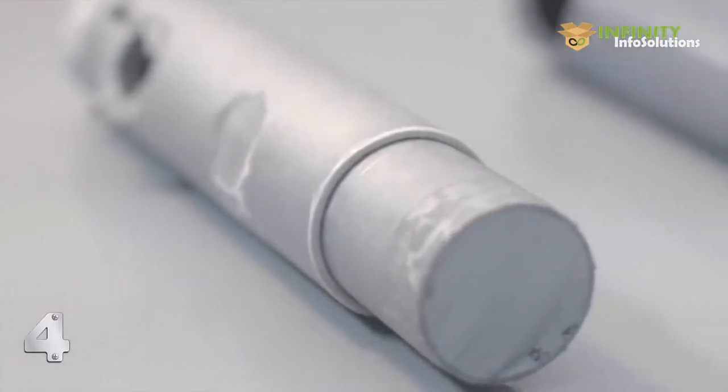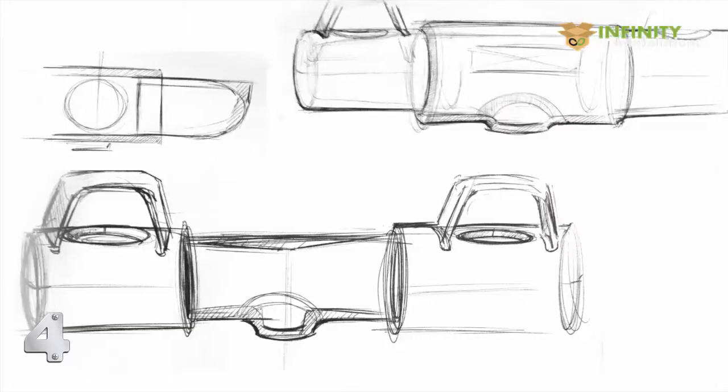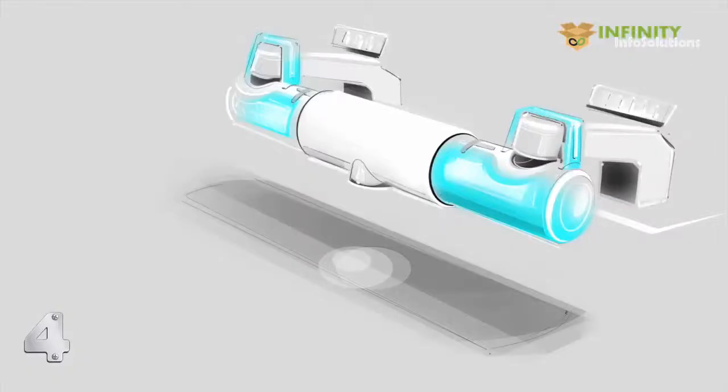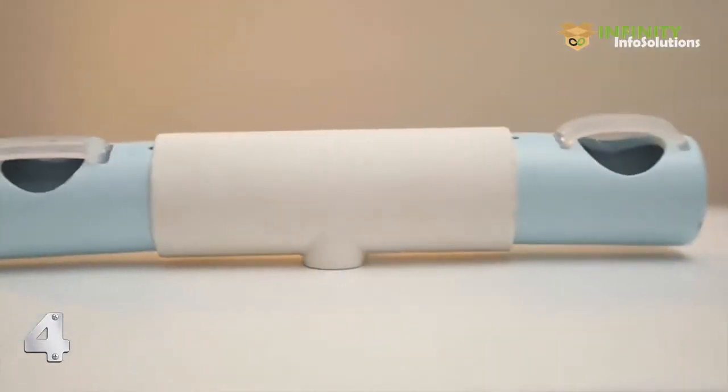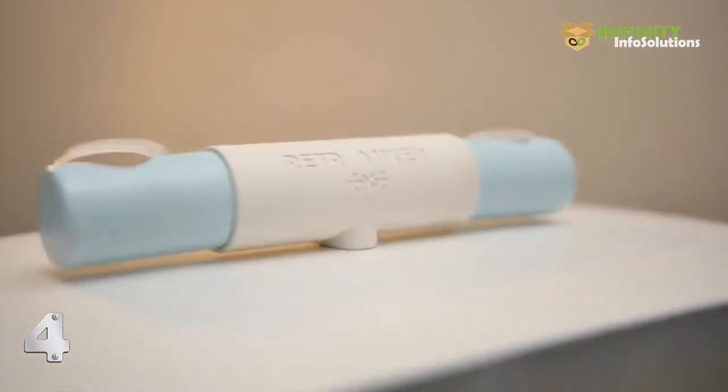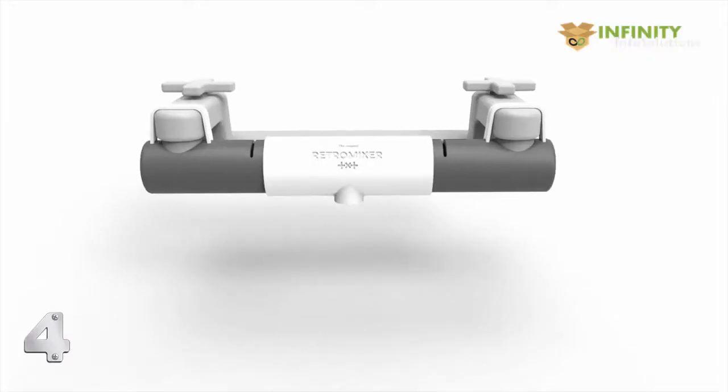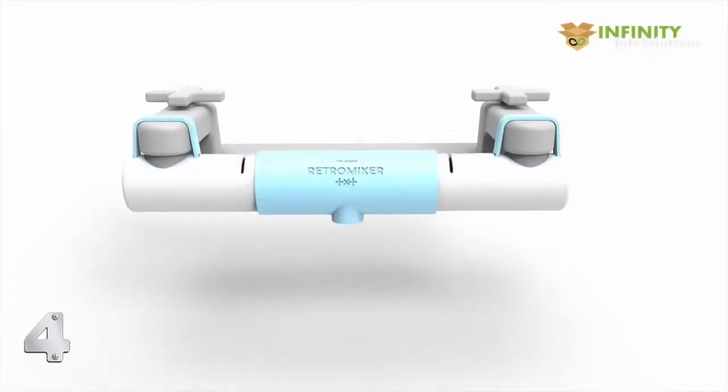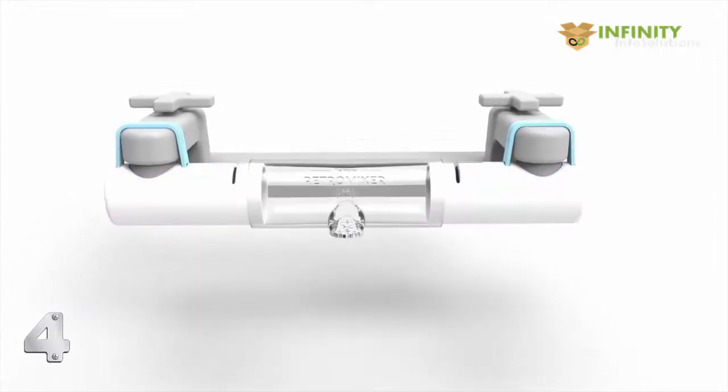This is the deal, we have 3D printed several prototypes, finalized the design, and now need the money to initiate production. To get the wheels turning, we need 4,000 pounds to secure a small batch of Retromixers of sufficient quality and aesthetics. The more money we gather, the more freedom we'll have with customization. We need to make this happen. It would be great to have you on board.